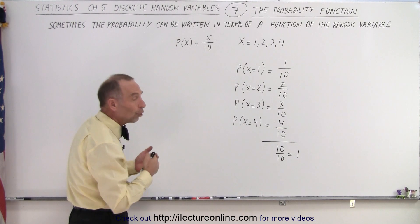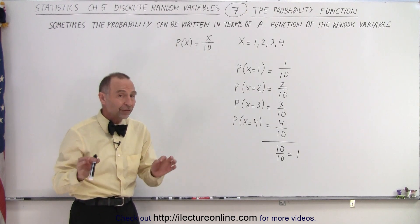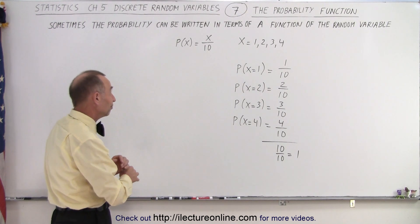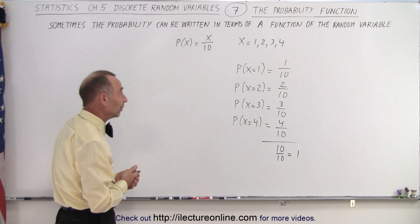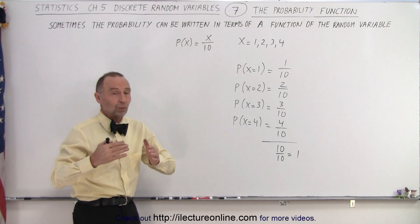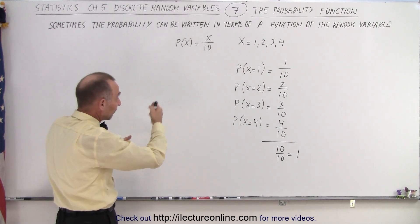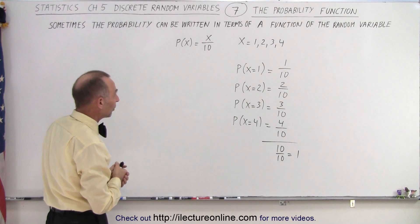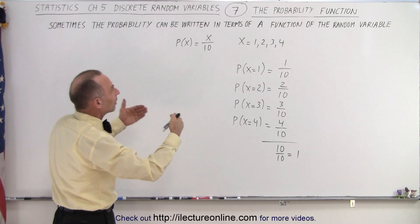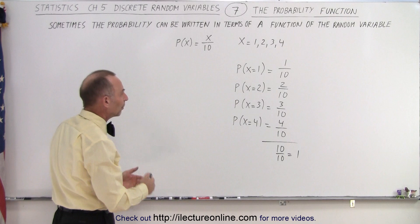So again, this doesn't always work. Sometimes it's very difficult to come up with a function or just about impossible. Now, also what we can have instead of just writing out like a function, like just f of x equals x over 10, for example, we could sometimes simply list all the various probabilities.